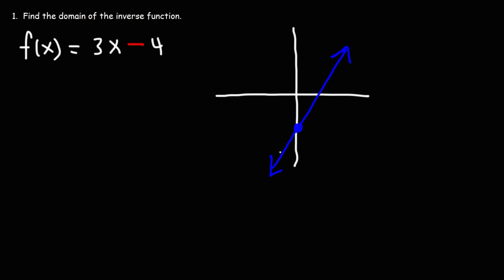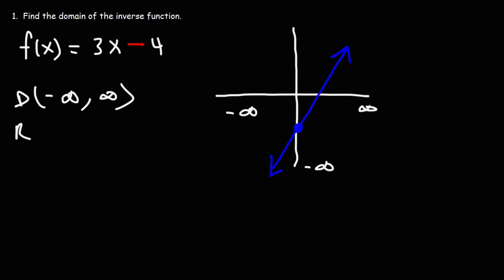The domain ranges from negative infinity to infinity. The domain represents the x values of the function that it can have, and x could be anything. The range has to do with the y values. y could be anything in this graph — there are no restrictions.